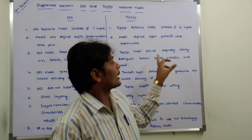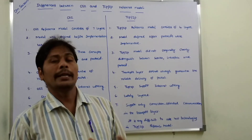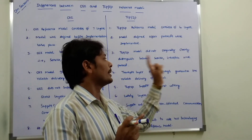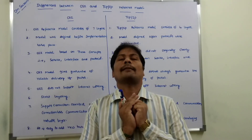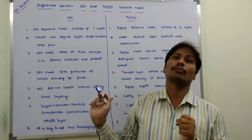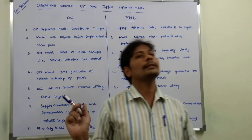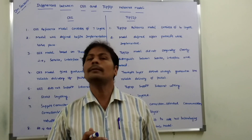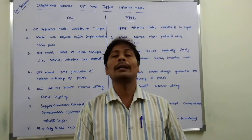But the TCP/IP reference model does not clearly distinguish between service, interface, and protocol. The OSI reference model clearly distinguishes what is service, what is interface, and what is protocol, but the TCP/IP reference model does not clearly distinguish between service, interface, and protocol.